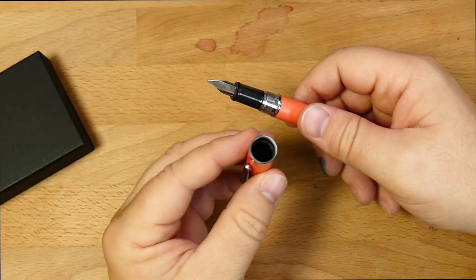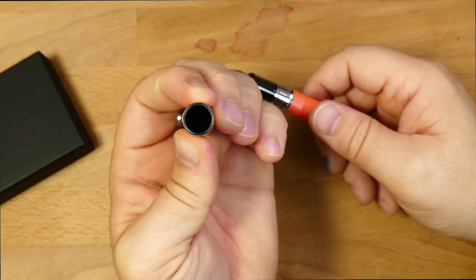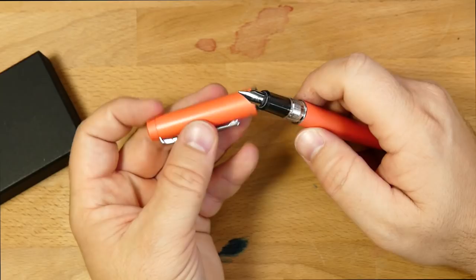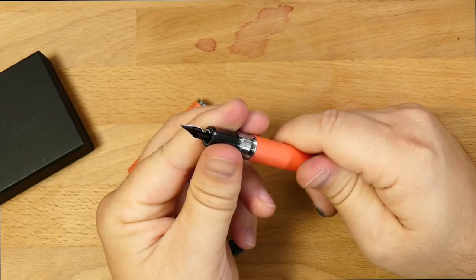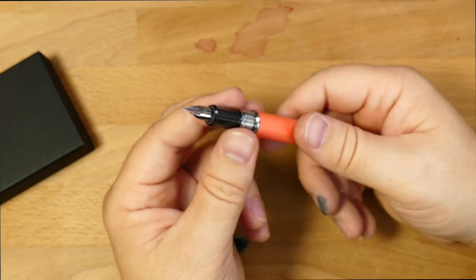When you open this guy up, you'll see a few things. One is that if you can look inside the cap, just a little bit, you might be able to catch the edge of the slip and seal mechanism. So this does have a slip and seal mechanism in the cap, just like the 3776s, which will keep your nib from drying out. And indeed, it has kept this nib from drying out, although I've only had it for about a month. And I've used it a lot. So it wasn't really in any danger of drying out.